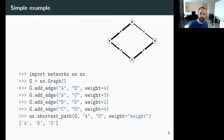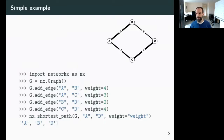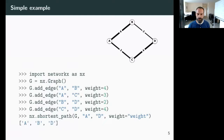Here's a quick example. You import NetworkX as nx, just like you import numpy as np. You create an empty undirected graph — we also offer directed graphs and multigraphs. Then you add edges; for example, adding edge A-B with weight 4. You can ask an algorithm like shortest path: what's the weighted shortest path in graph G between nodes A and D? The answer is A-B-D because 6 is less than 7.